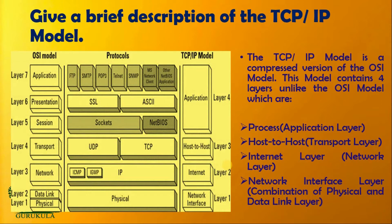This model will have only four layers, as opposed to seven layers in the OSI model — namely: application layer, transport layer, network layer, and network interface layer. The application layer takes the responsibility of process-to-process communication, and it is a combination of the application layer, presentation layer, and session layer as in the OSI model.